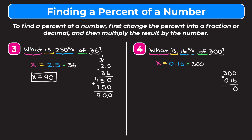6 times 0 is 0, 6 times 0 is 0, 6 times 3 is 18. For the second line, 1 times 0 is 0, 1 times 0 is 0, 1 times 3 is 3. We can skip multiplying the last 0 as it just gives zeros. Adding straight down: 0 plus 0 is 0, another 0, 8 plus 0 is 8, 1 plus 3 is 4. We have two digits to the right of the decimal point in our original numbers, so we want two digits to the right in our answer, giving us 48. X equals 48, meaning 16% of 300 is 48.